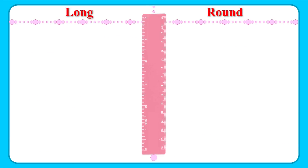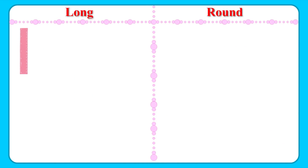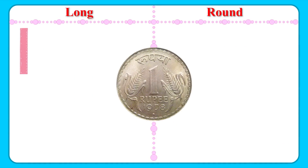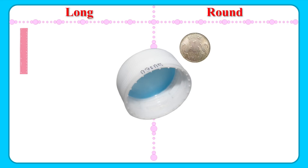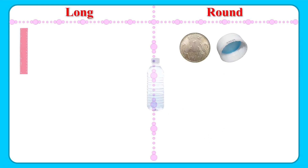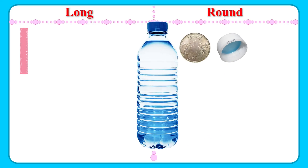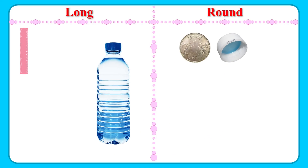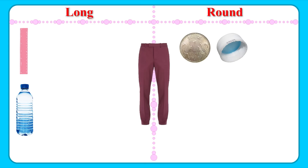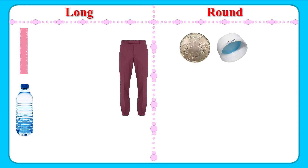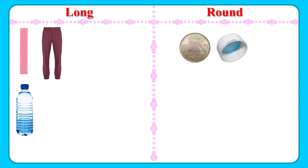A ruler is long. A coin is round. And so is a bottle cap. A water bottle is long, too.